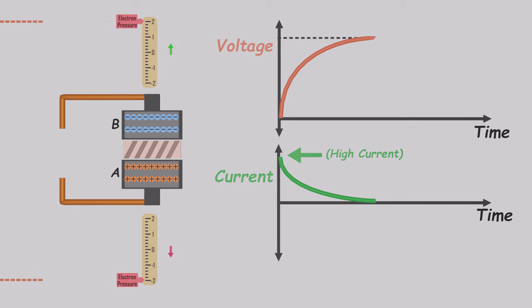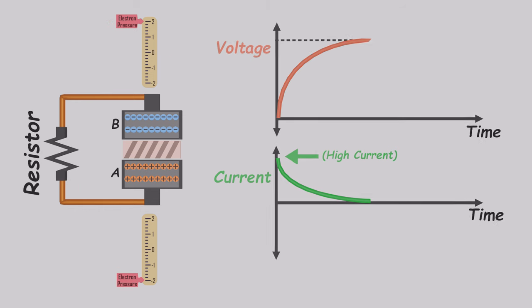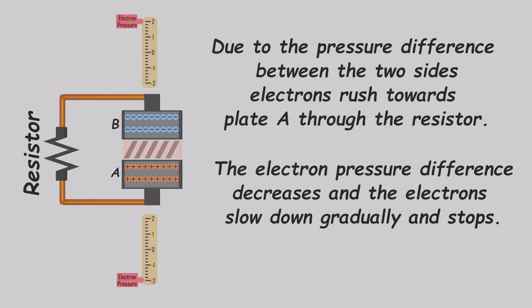Now let's remove the battery and connect the two ends of the capacitor through a resistor. Initially, there is a significant electron pressure in plate B and a very low electron pressure in plate A. Consequently, electrons rush towards plate A through the resistor, resulting in a high current but in the opposite direction. Over time, the electron pressure difference decreases, causing the electrons to slow down gradually. When the pressure difference reaches zero, the current stops.